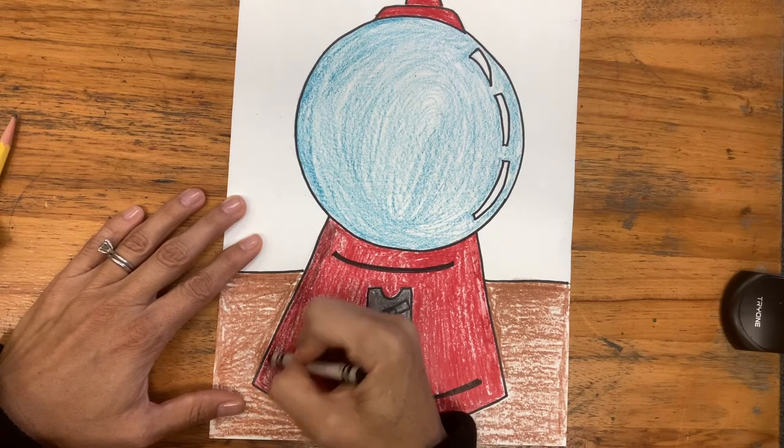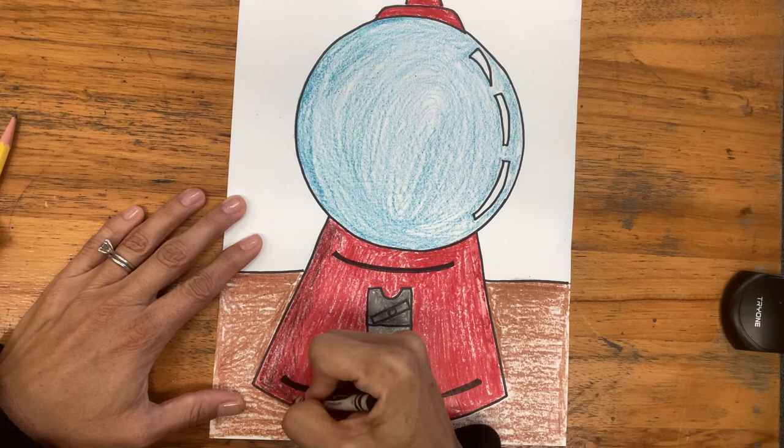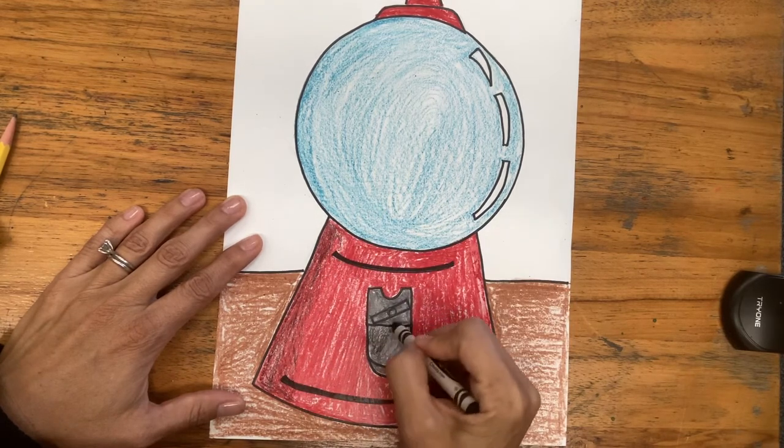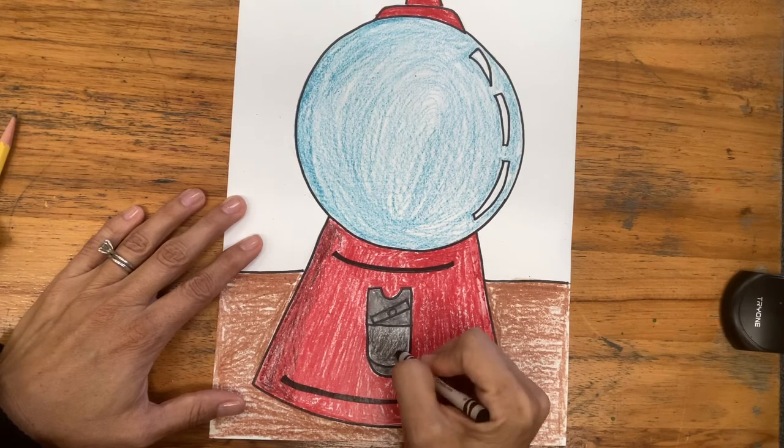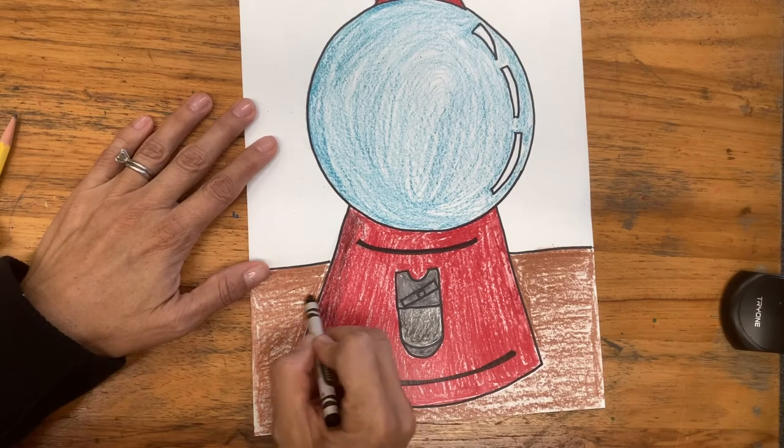Now if you wanted to, you could leave a section white or try to color very lightly to have more of a highlight on that section. I can come in here and shade in as well.